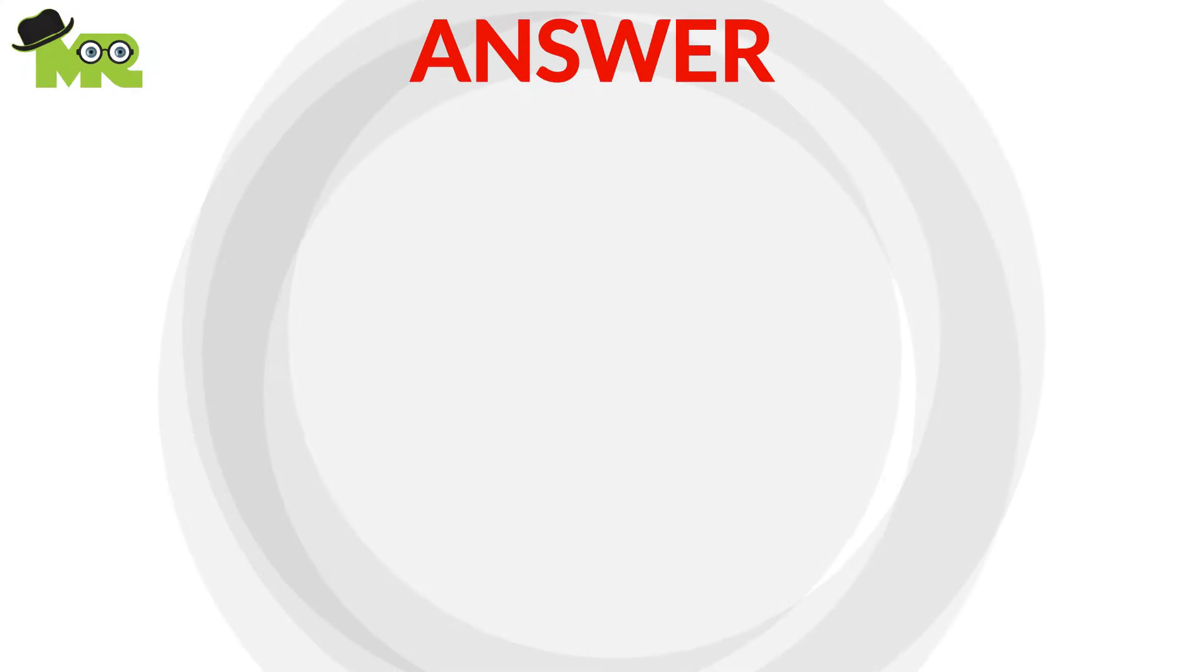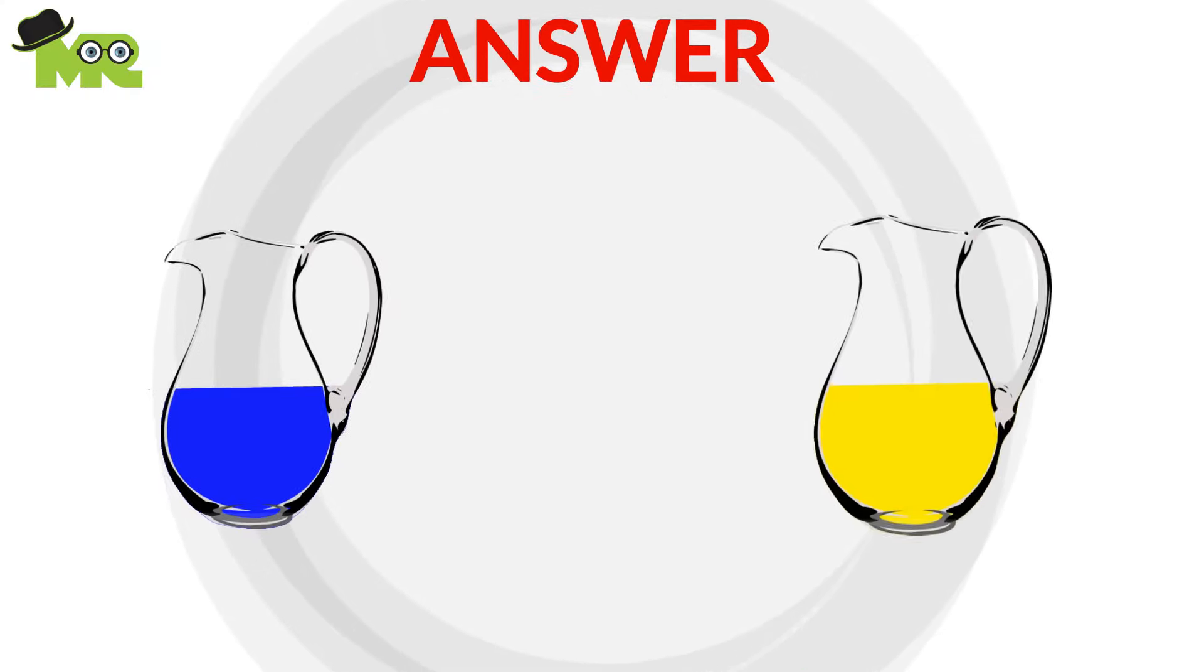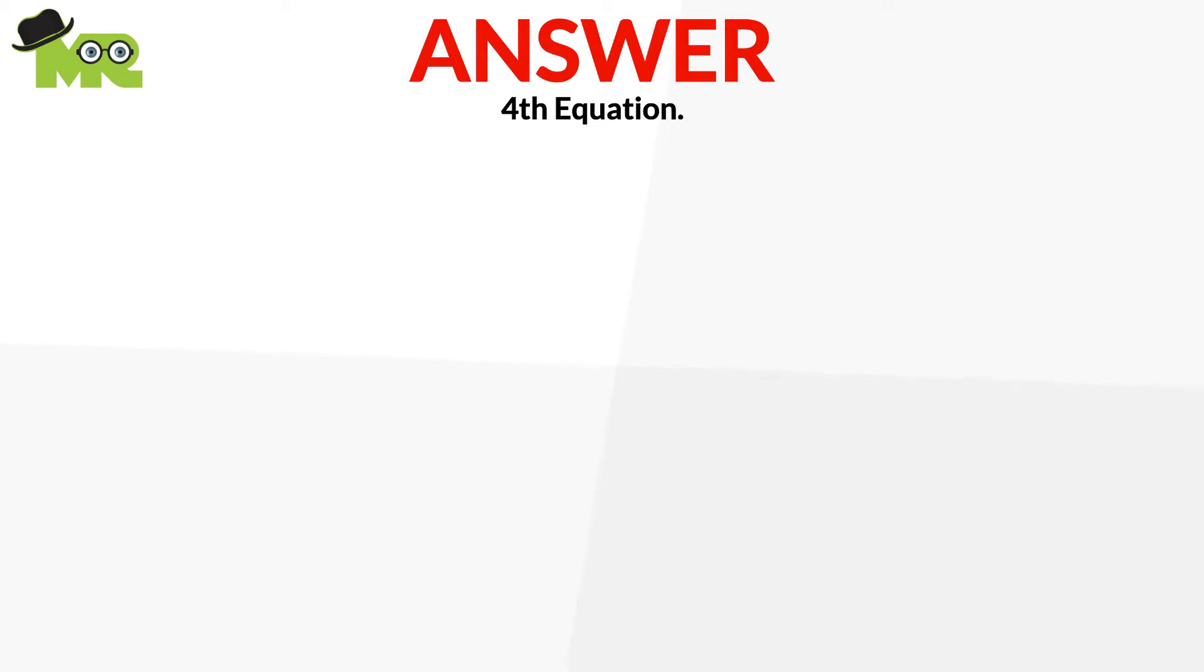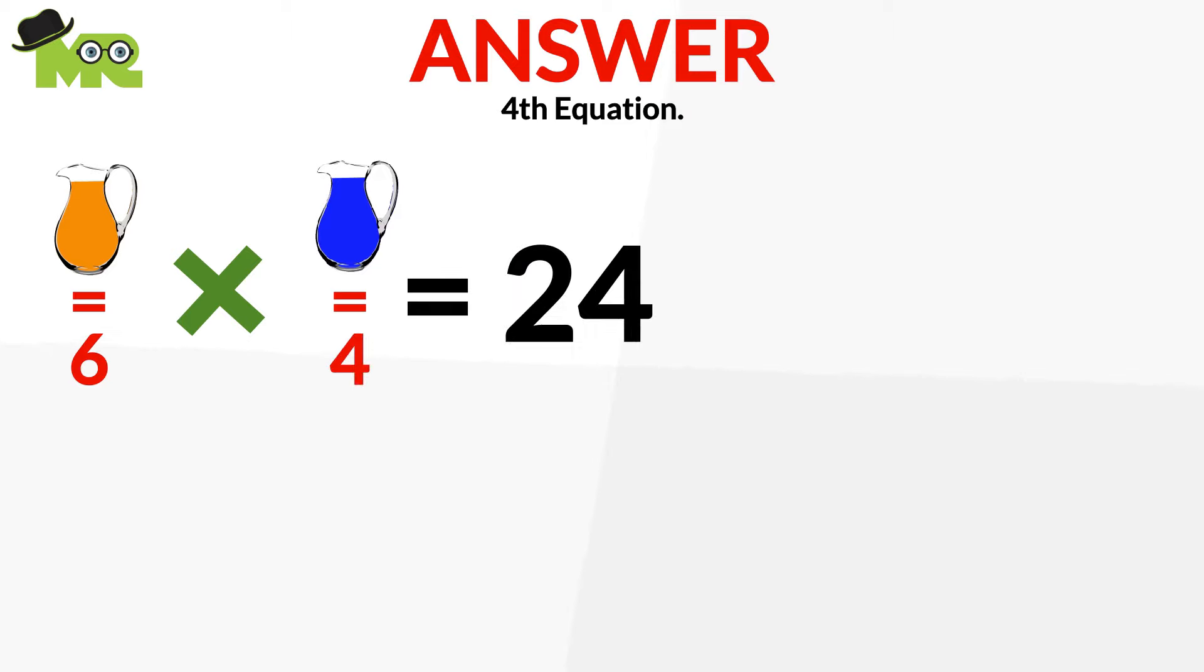Friends, simply mix half a jug of blue juice and half a jug of yellow juice together to get green juice. Therefore, the equation is a jug of orange juice is equal to 6, then multiply this with a jug of blue juice, which is equal to 4. Then you get 24.